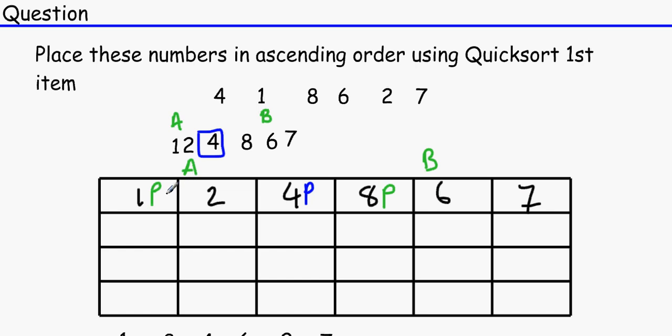So we pick the first number of list A and the first number of list B. Don't forget about four because that was our pivot. We are not going to change that now.